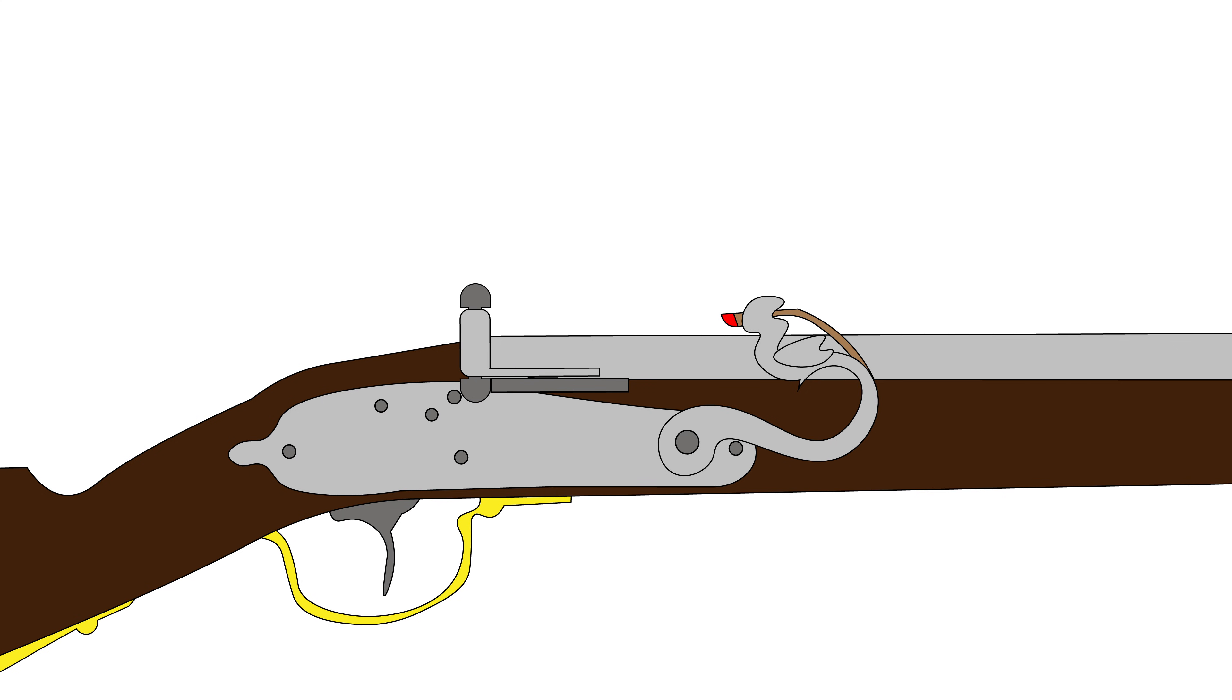To fire the musket, the shooter would blow on the match cord to make it burn hotter, then open the pan cover to expose the priming powder. Upon pulling the trigger...